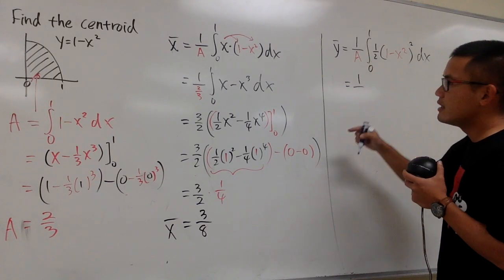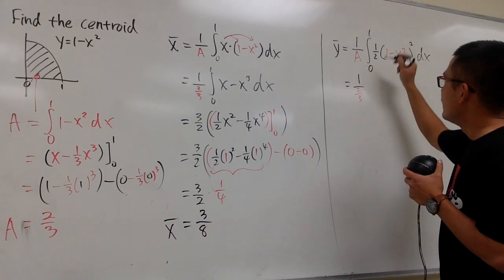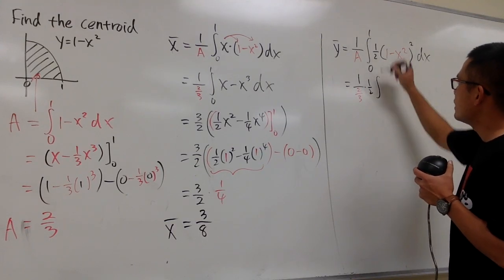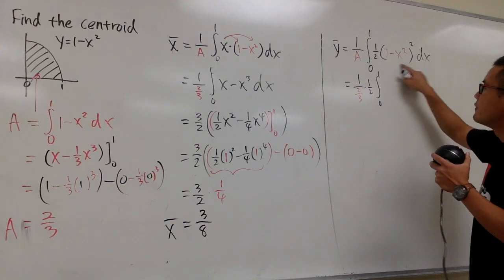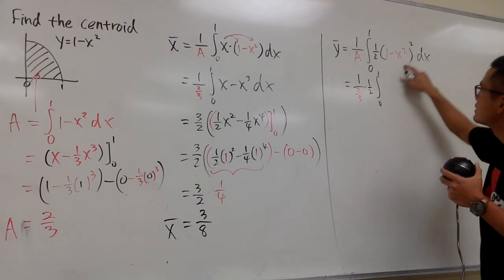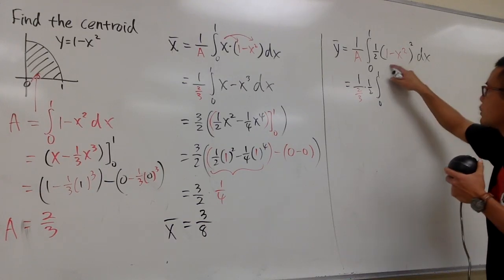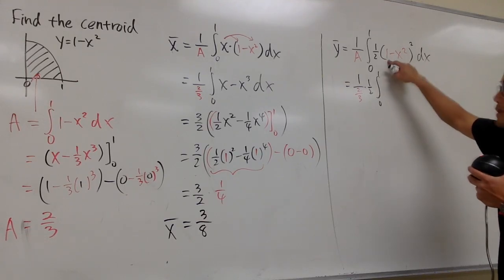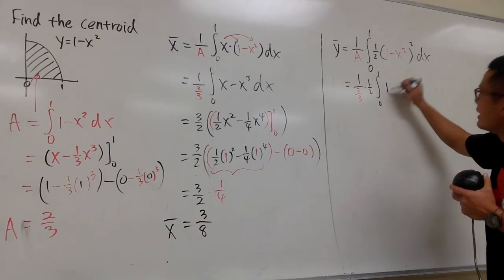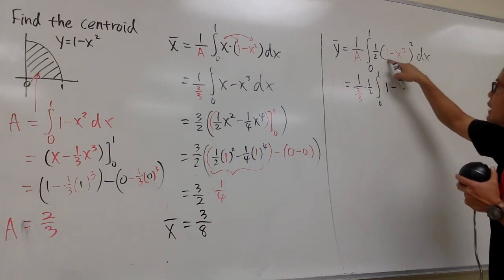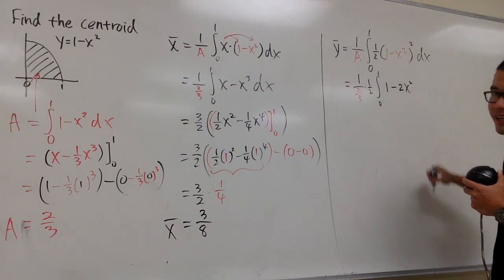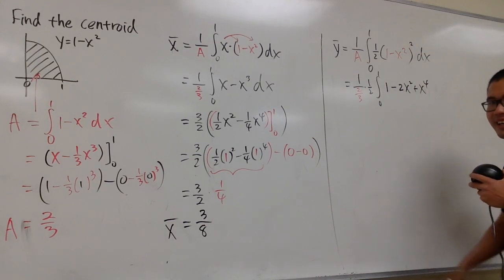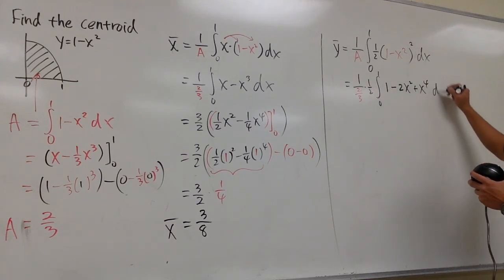1 over A is 2 thirds, so we can bring the 1 half to the front. Then inside the integral from 0 to 1, I need to expand (1 minus x squared) squared. Square the first term: 1 squared is 1. Then minus 2 times 1 times x squared, which is minus 2x squared. Then add x squared squared, which is x to the fourth power.